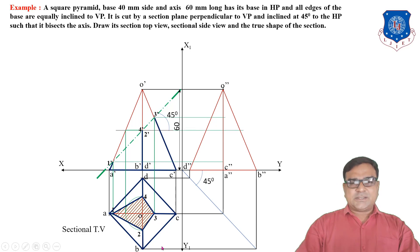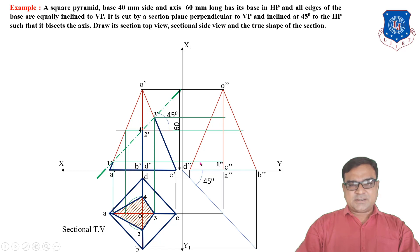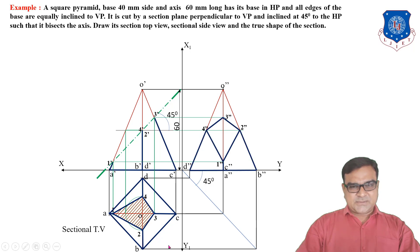For the sectional side view, draw horizontal lines from each cutting point. Point 1 is on OA, so its side view lies on edge O″A″. Similarly project from 2′, 3′, and 4′ horizontally to the side view. Join the resulting points with straight lines to get the sectional side view.